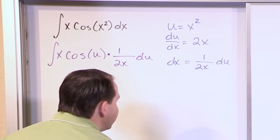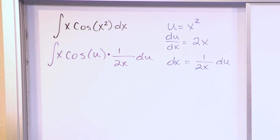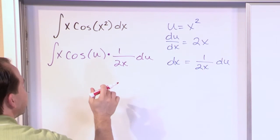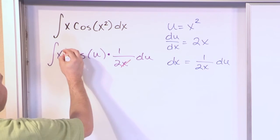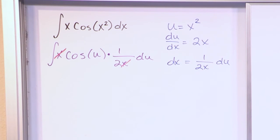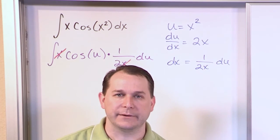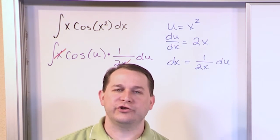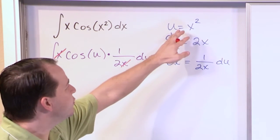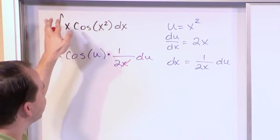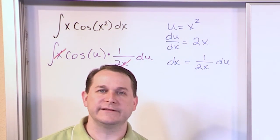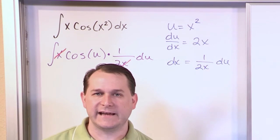Now you see what we've done here. We've created a situation by this very specific substitution so that when I put it all in there, this x actually cancels with the x out in front. And I want to stop here for a second and make sure you understand that the only reason that cancellation happens is because we chose u correctly. We chose u to be x squared.